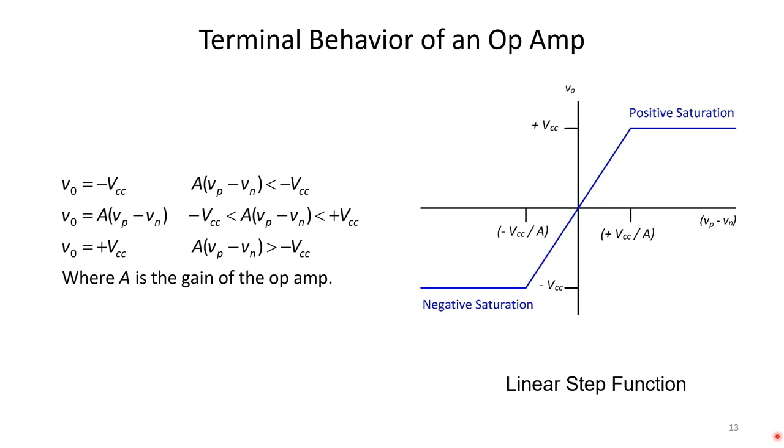In the in-between region, the op amp is governed by a linear line that has a slope of A, where A is the gain of the op amp. This is a very narrow region where the op amp operates in this linear region. The blue line across the middle connecting the positive and negative saturation, this region is called the linear region, and it's given by minus VCC divided by A. Let's take a look at what possibly the values of A might be.